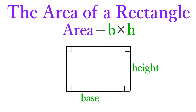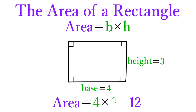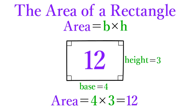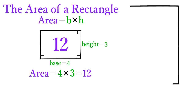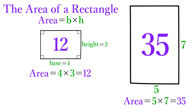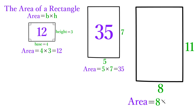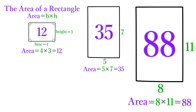For example, a rectangle with a base of 4 and a height of 3 has an area of 12, because 4 times 3 equals 12. When the base and height of a rectangle are 5 and 7, its area is 35. And when the base and height of a rectangle are 11 and 8, that rectangle has an area of 88.